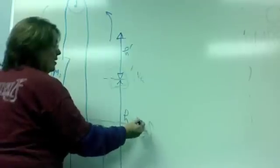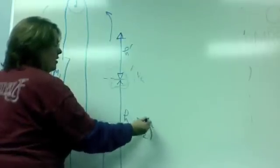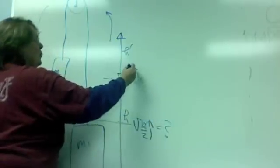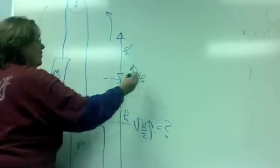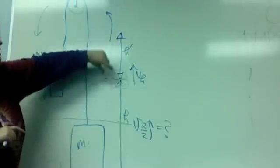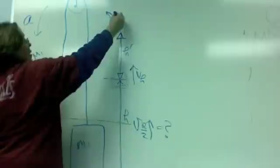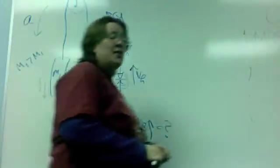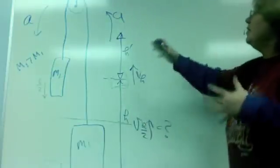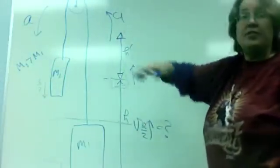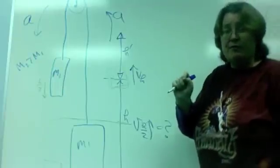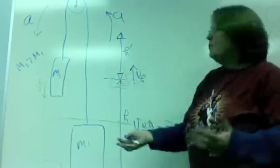And we're going to look for all three of these. We're going to look for the speed when the two masses pass each other, the speed of the masses just as m2 hits the floor, and then the extra height that m1 is carried up into the air. Again, the system will accelerate in this direction, in the counterclockwise direction. Now, we could use forces and balance forces and get tensions and accelerations and do our kinematics approach like we've done before. Or we could just do energy. What a simple thing.